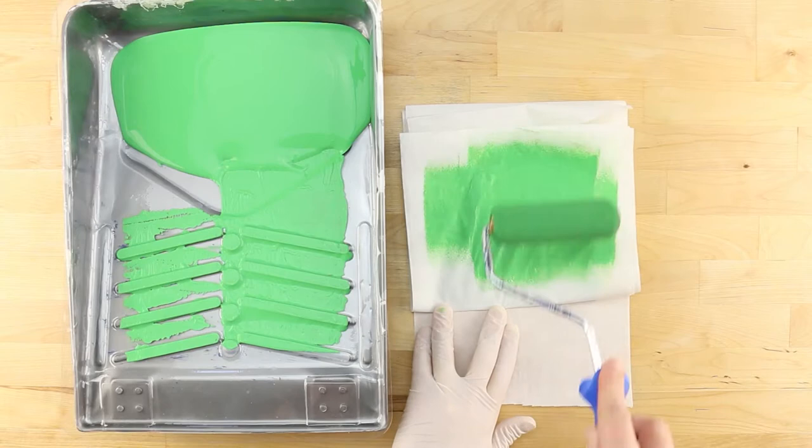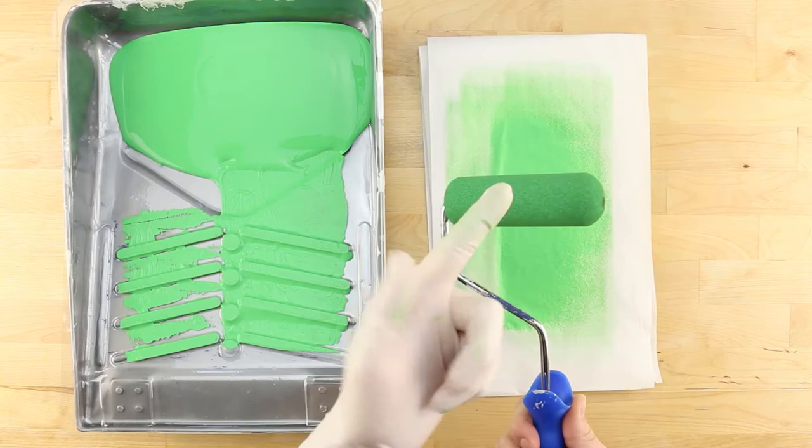Use a second piece of paper towel to remove excess saturation from the roller, testing it out on a finger to see if it smudges. When the paint doesn't smudge, you are ready to stencil.